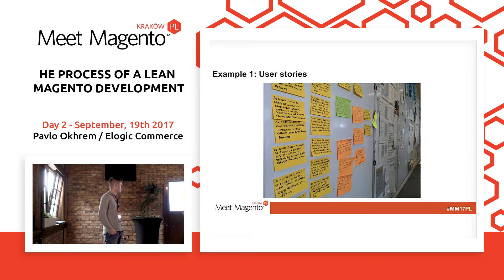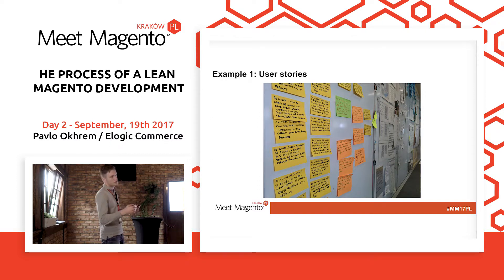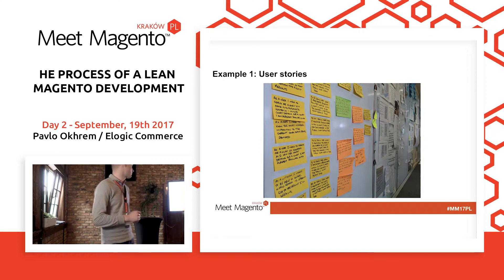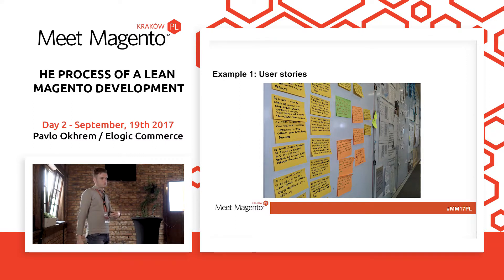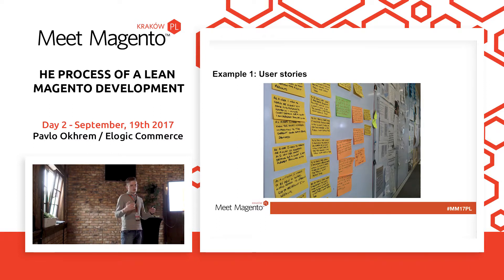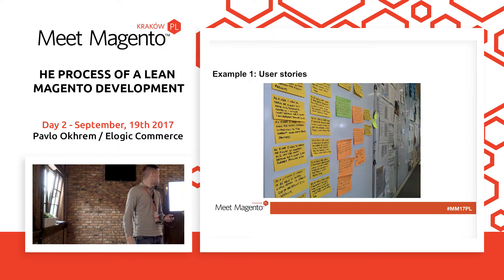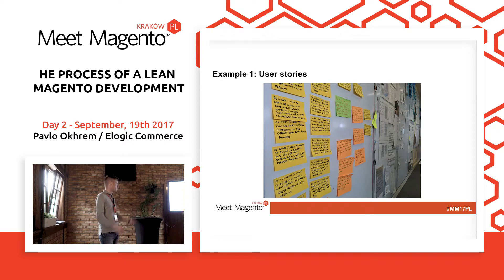Now I'll try to be a bit practical. What are the real world examples of what can be done in order to implement the Lean approach inside your team? The real practical things are user stories. When you have user stories or a mind map, you usually see the whole picture. You can adjust it, you can understand what the end product would be, and if there are any concerns you can optimize it.